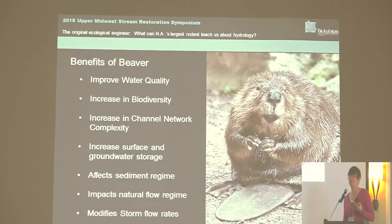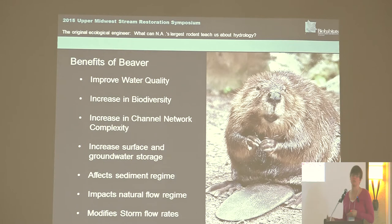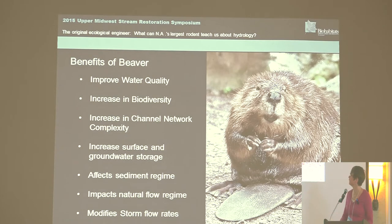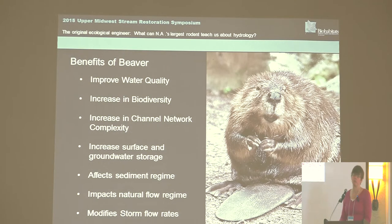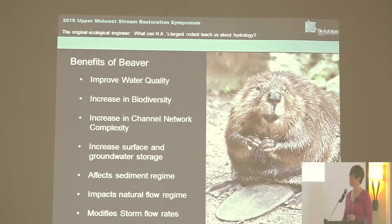Beaver affect the sediment regime by creating an aggradation sequence. Studies have shown that the net sediment input into the system is actually less in a beaver system than in a non-beaver system. They also modify storm rates by providing more storage on the landscape and getting more flows out of a confined channel and into an area where there's more roughness, which decreases velocity and decreases stream power.